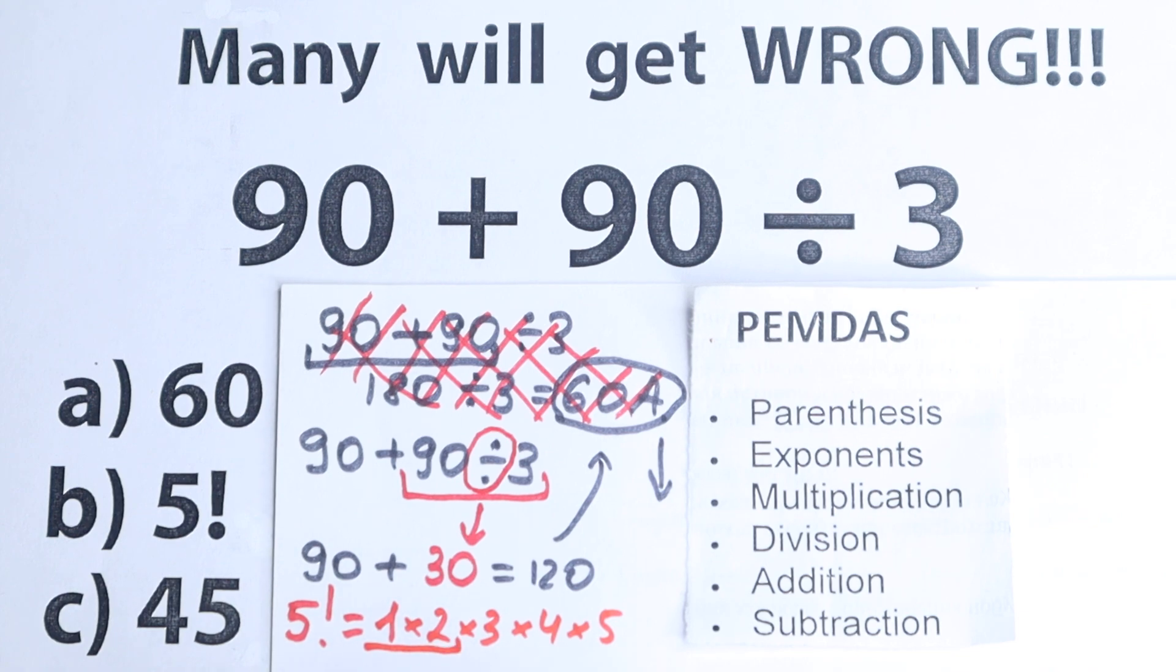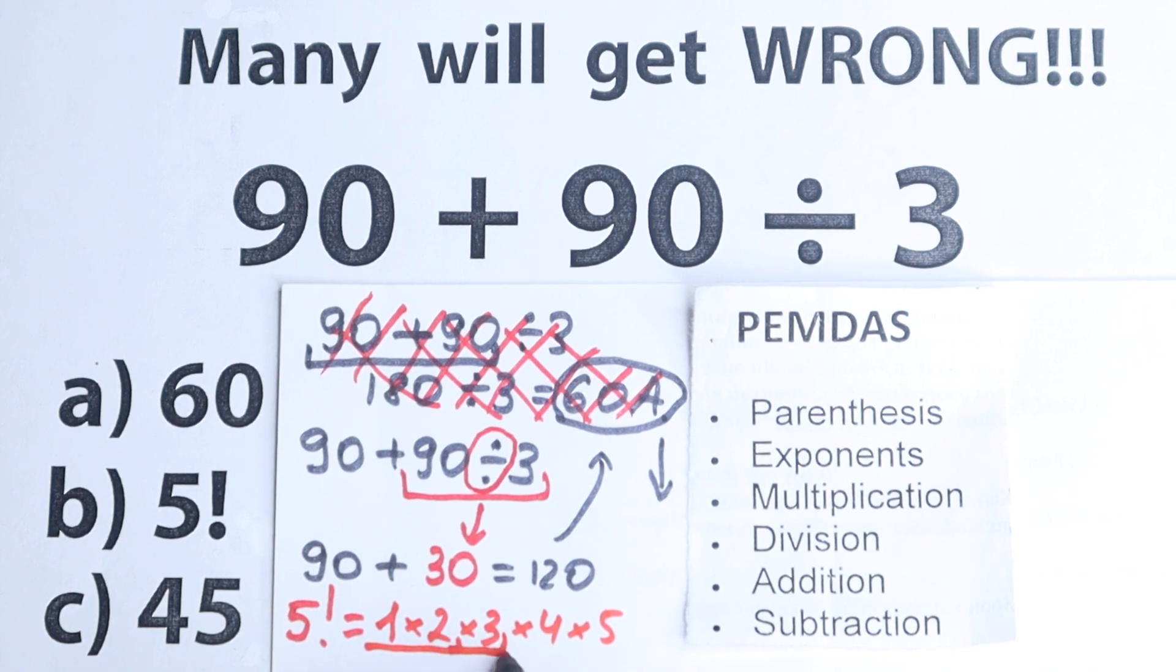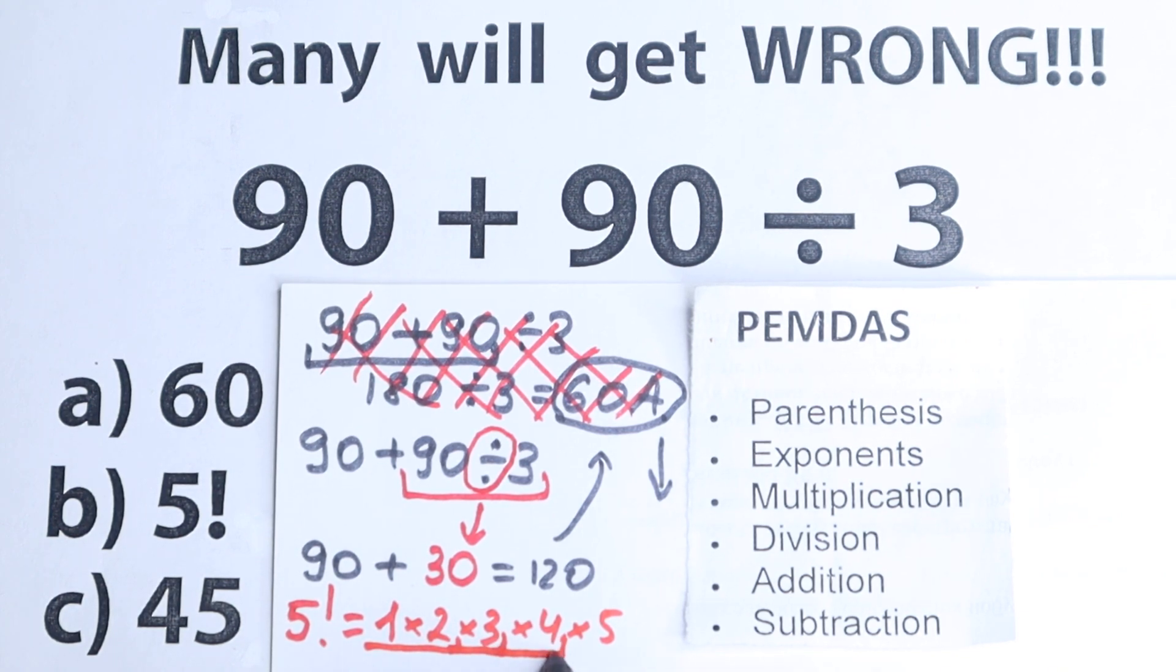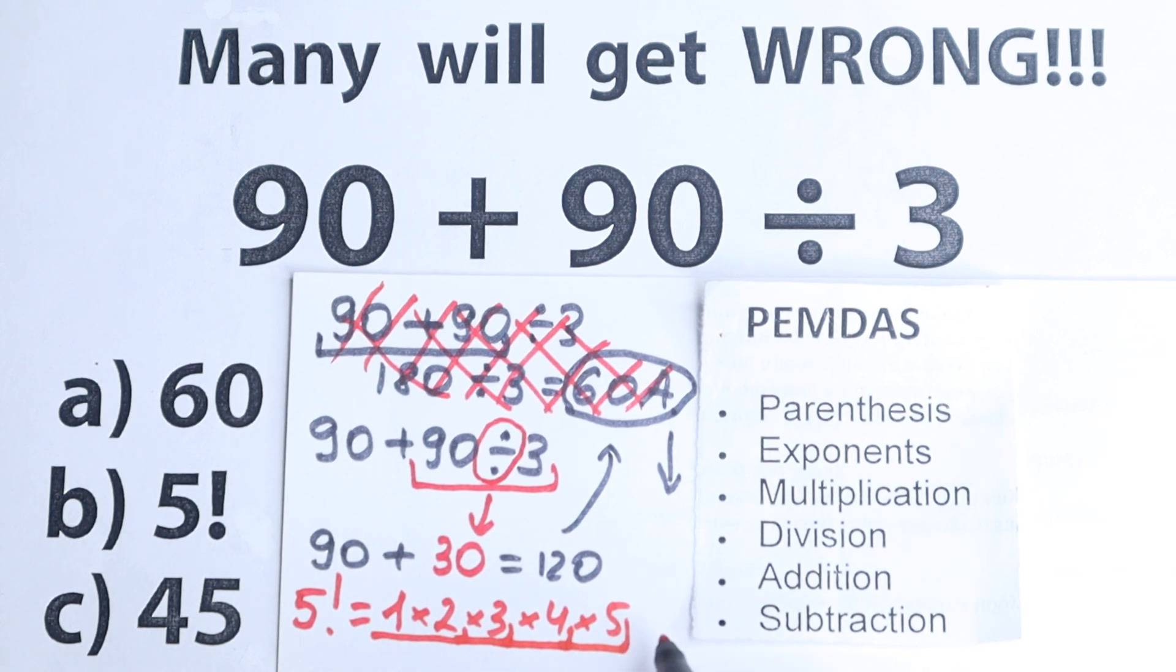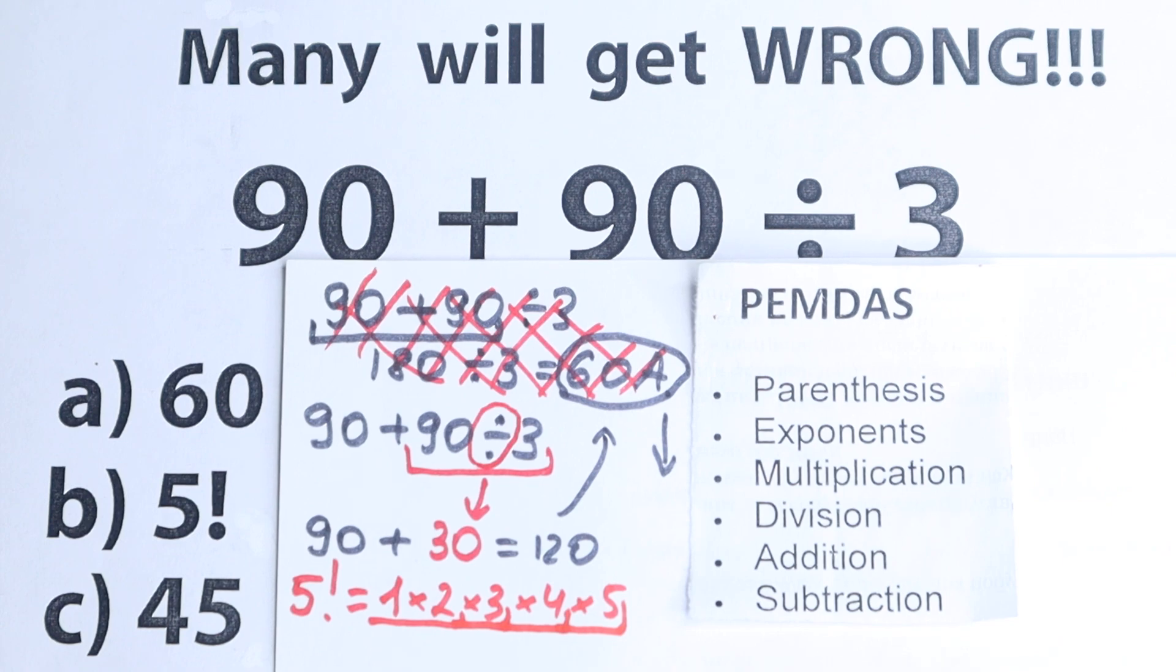So 1 times 2 equal to 2. 2 times 3, 6. 6 times 4, 24. And 24 times 5, this is really great. This is equal to 120. So we can easily say that 5 factorial equal to 120.